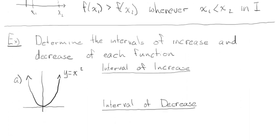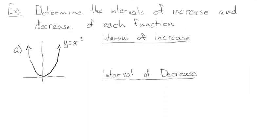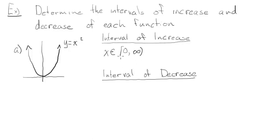Let's look at a couple of examples. The first one is just a parabola — the parent function x². Determine the intervals of increase and decrease. This function is increasing when the y-values are going up. There are two ways to write this, but we'll use interval notation. Starting at x = 0 and going right, the y-values are increasing, so the interval of increase is [0, ∞).